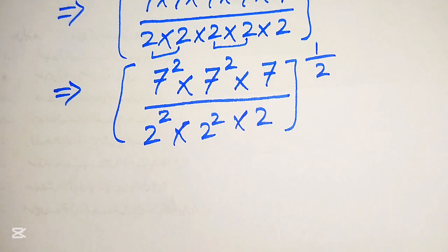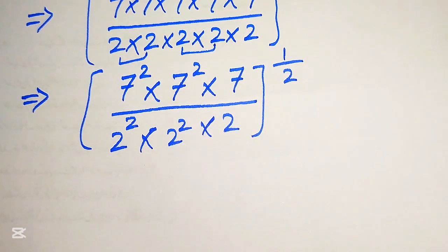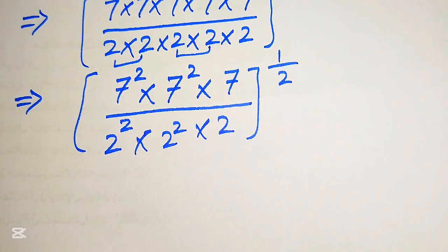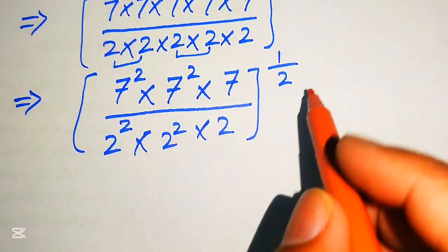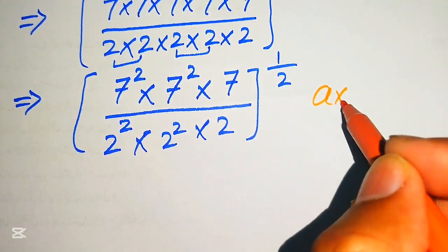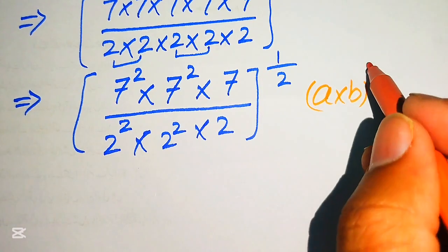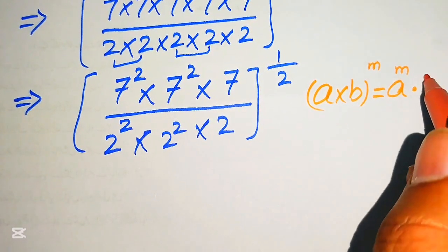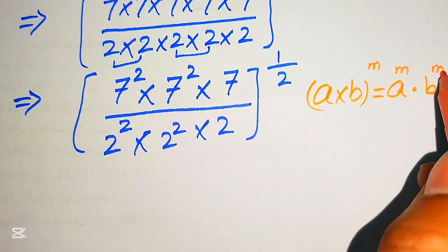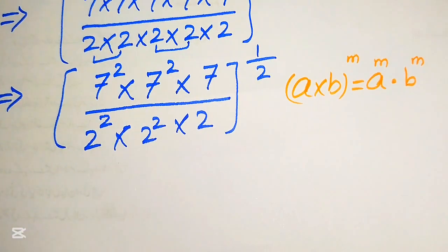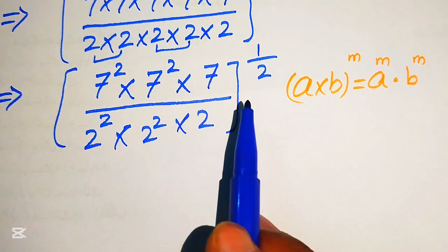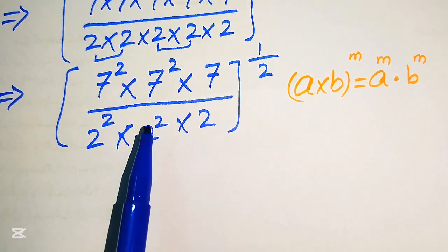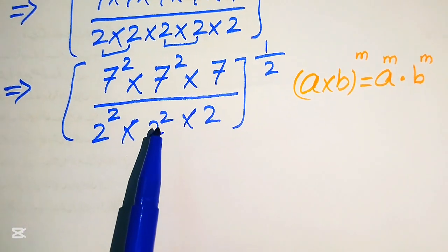We can now apply another exponent law: (a × b) to the power of m equals a to the power of m multiplied by b to the power of m. According to this law, we apply the power of 1 over 2 on each of the values in both the numerator and denominator.